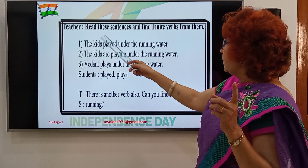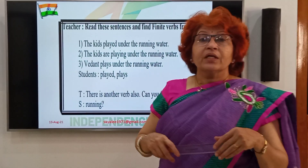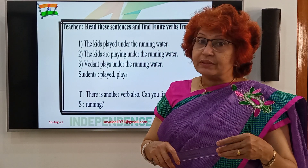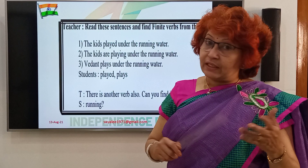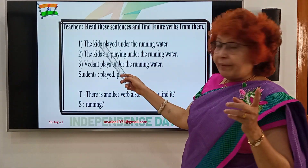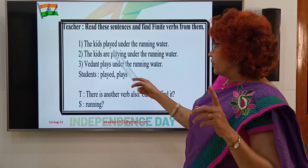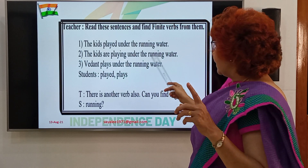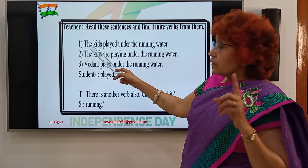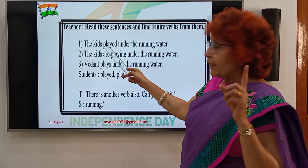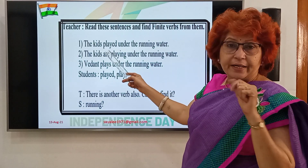I am reading these sentences — find the finite verbs. The kids are playing under the running water. The kids play and the kids are playing. See the first thing: the finite verb is 'played' — V1 is 'play' and V2 is 'played'. That is the finite verb.